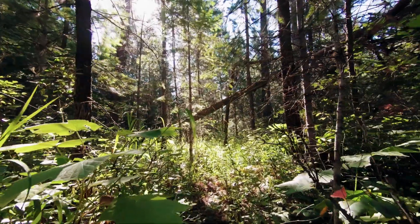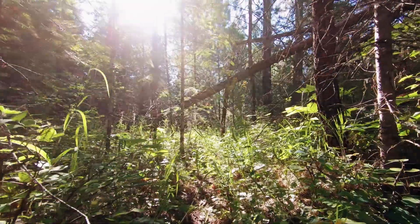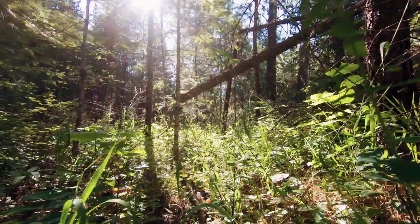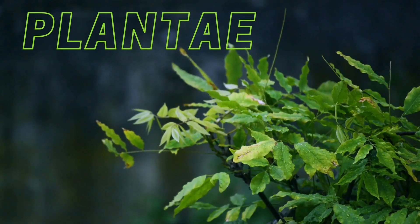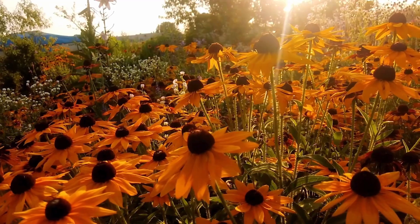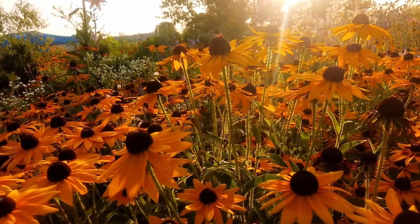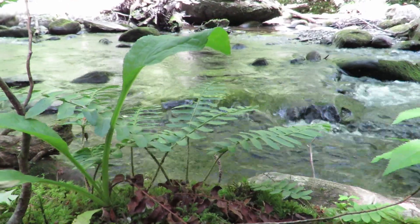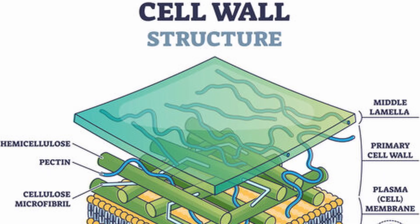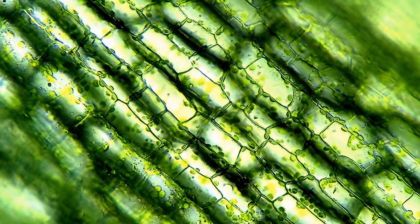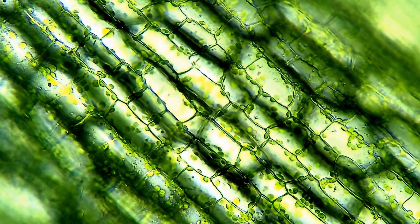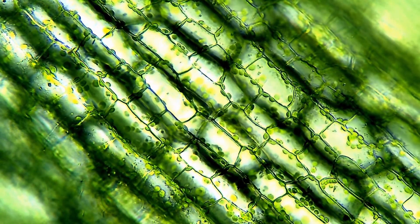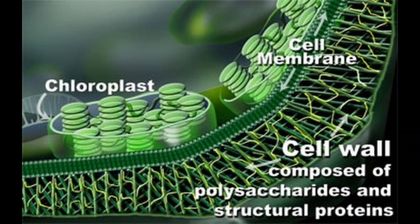The next kingdom is a kingdom full of eukaryotic, multicellular, autotrophic organisms — this kingdom is plantae. These photosynthetic organisms are the staple to terrestrial and most aquatic ecosystems. Unlike fungi cell walls, which are made of chitin, plant cell walls are composed of cellulose. Within plant cells, as well as the photosynthetic protists, there are specialized organelles in which the magic of photosynthesis happens. These organelles are called chloroplasts.